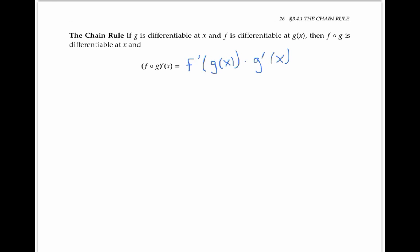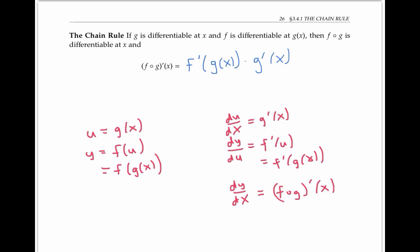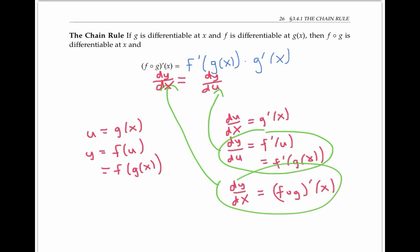Sometimes the chain rule is written in Leibniz notation — that is, the dy/dx notation. To see how this works, let's let u equal g of x and let y equal f of u; in other words, y is f of g of x. Now, du/dx is just another way of writing g prime of x, and dy/du is another way of writing f prime of u, or in other words, f prime of g of x. Finally, if we write dy/dx, that means we're taking the derivative of f composed with g, so that's the derivative of f composed with g at x. Using this key, I can rewrite the expression as dy/dx equals dy/du times du/dx.